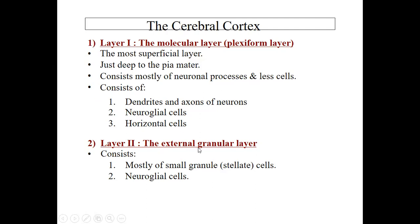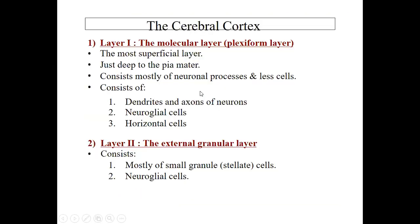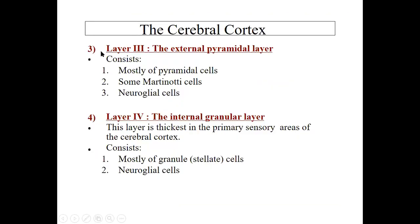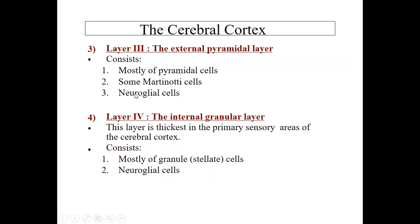Layer two is the external granular layer. From the name, we know that most cell types here are granule cells, or stellate cells — star-shaped cells. Neuroglial cells are also present in layer two. Layer three is the external pyramidal layer. Most cell types present here are pyramidal cells. We also have the Martinotti cell, which is present in layer three, along with neuroglial cells.